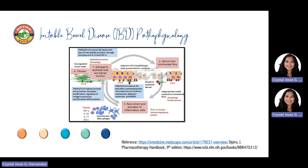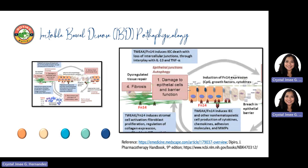For the pathophysiology of IBD, the slide shows the model of pathological mechanisms for the TWEAK-FN14 pathway in IBD. TWEAK stands for Tumor Necrosis Factor-Related Weak Inducer of Apoptosis, a member of the Tumor Necrosis Factor Superfamily that acts on cells by binding to its only receptor, FN14, which stands for Fibroblast Growth Factor Inducible 14. The development of IBD commonly begins when damage to epithelial cells and barrier function are initiated.